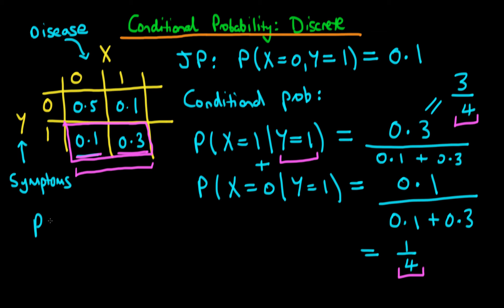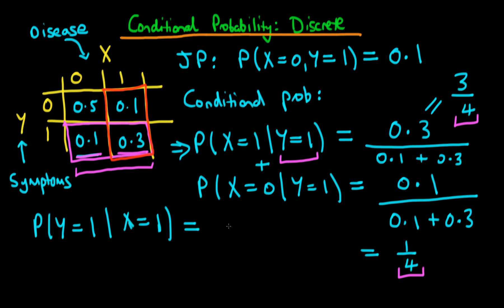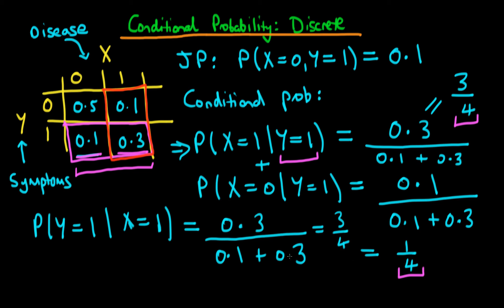We could also work out the probability that Y equals one given that X equals one. On the face of it this looks similar to before, but now we're constraining ourselves to the case where X equals one. Our sample space is now the second column, highlighted in red, and we want the probability that Y equals one given X equals one. Again the relevant entry is 0.3, and we normalise by dividing by 0.1 plus 0.3 equals 0.4. So this again becomes three quarters.